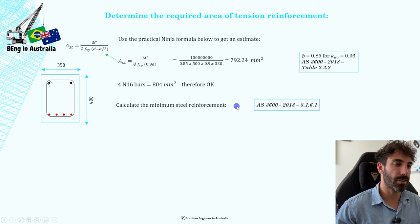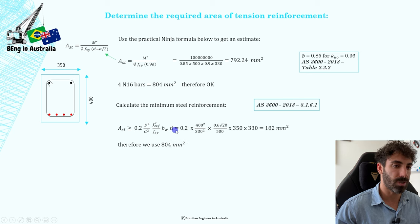We're just going to calculate the minimum steel reinforcement according to AS 3600, clause 1.8.1.6.1. The minimum steel reinforcement for this beam is 182 square millimeters, which is way less than 804.